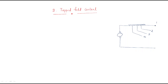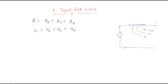The next method is tapped field control. Here we give tappings at different points along the field winding. In the first case with tapping at position 1, flux φ1 is maximum. With the second tapping, flux is φ2; third tapping gives φ3; fourth tapping gives φ4. Since φ4 < φ3 < φ2 < φ1, the corresponding speeds satisfy N4 > N3 > N2 > N1. By selecting different tapping positions, flux and speed can be controlled accordingly.